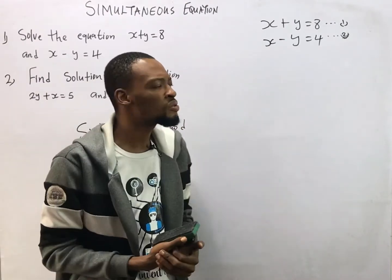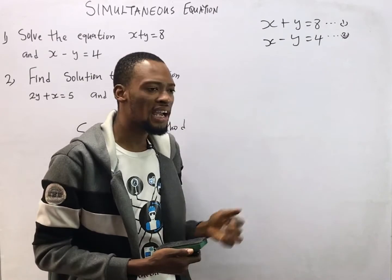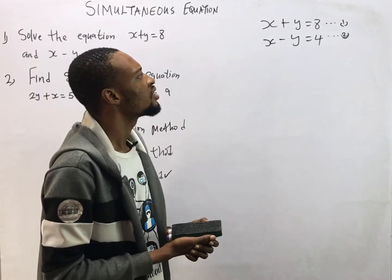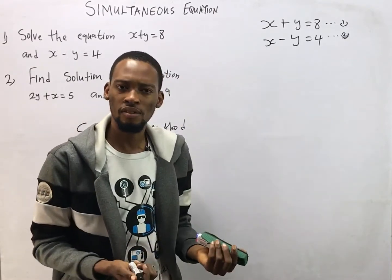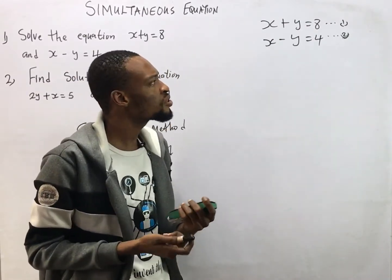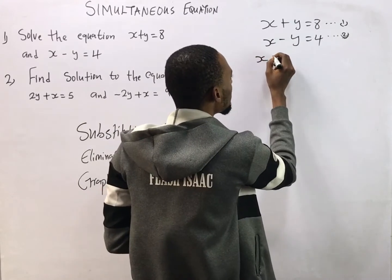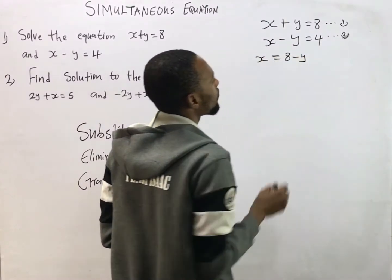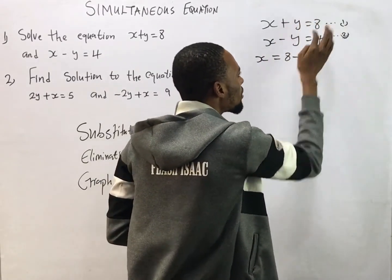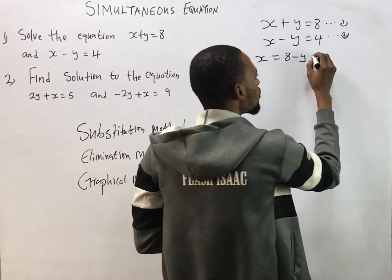If you've made up your mind to use equation one, the next step is: in equation one we have s and y — which one should I make the subject of the formula? I've chosen equation one and I've chosen to make s the subject formula. So s is simply 8 minus y — if you're making s the subject formula, you bring y to the other side and it becomes negative. This gives me equation three.